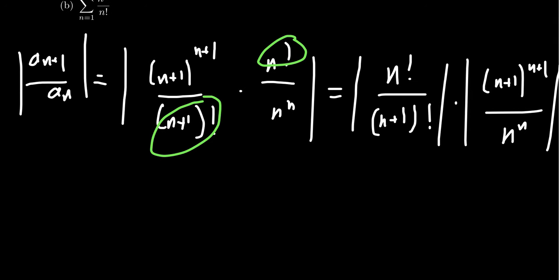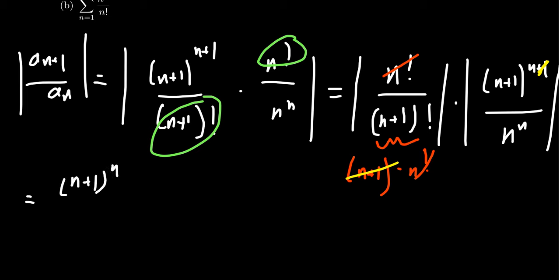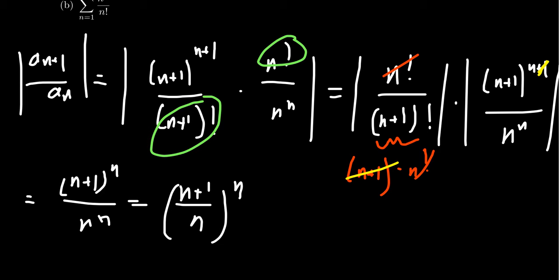Grouping the factorials gives n!/(n+1)!, and grouping the exponential parts gives (n+1)^{n+1}/n^n. Now (n+1)! factors as (n+1)·n!, so the n! cancels. Also, one factor of (n+1) in the denominator cancels with one from (n+1)^{n+1}, leaving (n+1)^n/n^n. Since both are to the power n, this becomes ((n+1)/n)^n = (1 + 1/n)^n.